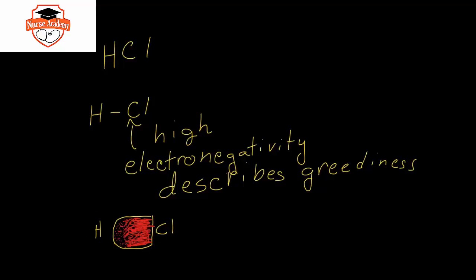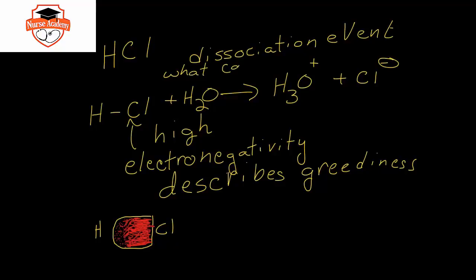When you put hydrochloric acid in water, you get what we call dissociation. It will dissociate into hydronium ion, which is water with an extra hydrogen ion attached to it, and chloride ion. This dissociation event is what causes acidity.